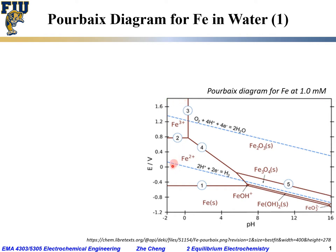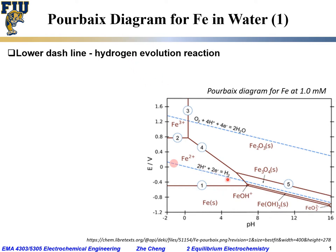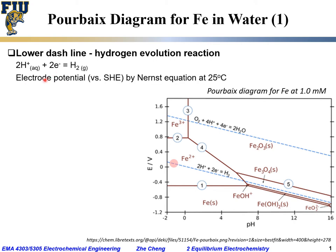Let's first look at this lower dashed line. It represents the hydrogen evolution reaction. The electrochemical half-cell reaction for hydrogen evolution is: two protons combined with two electrons to form one hydrogen gas molecule.